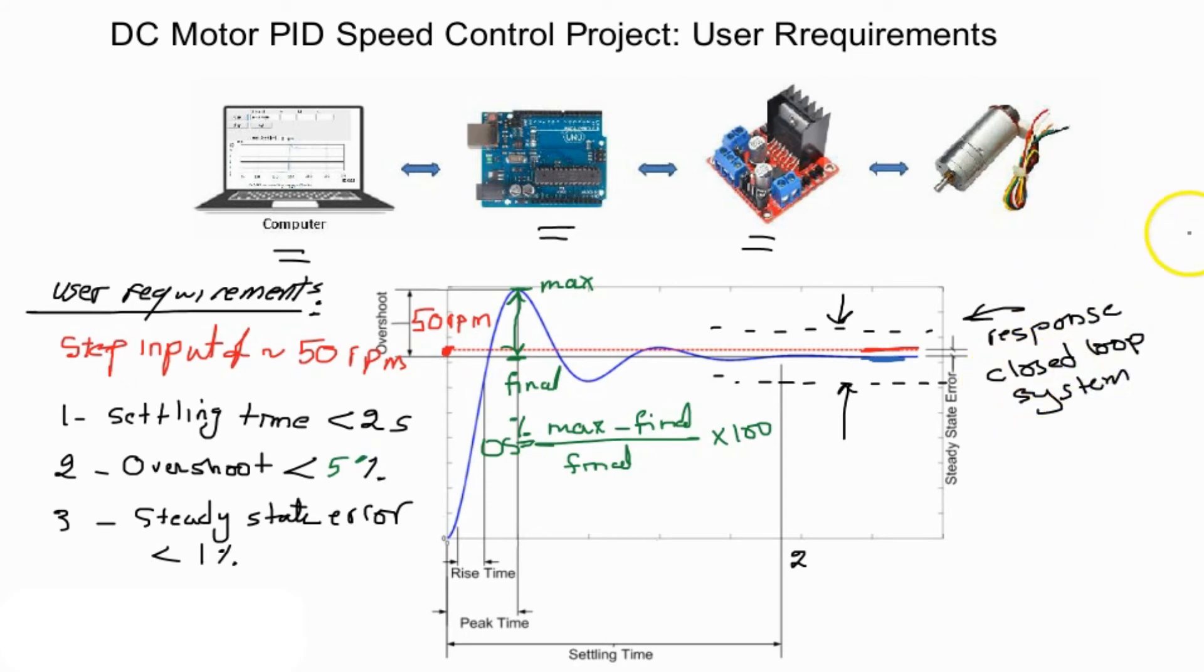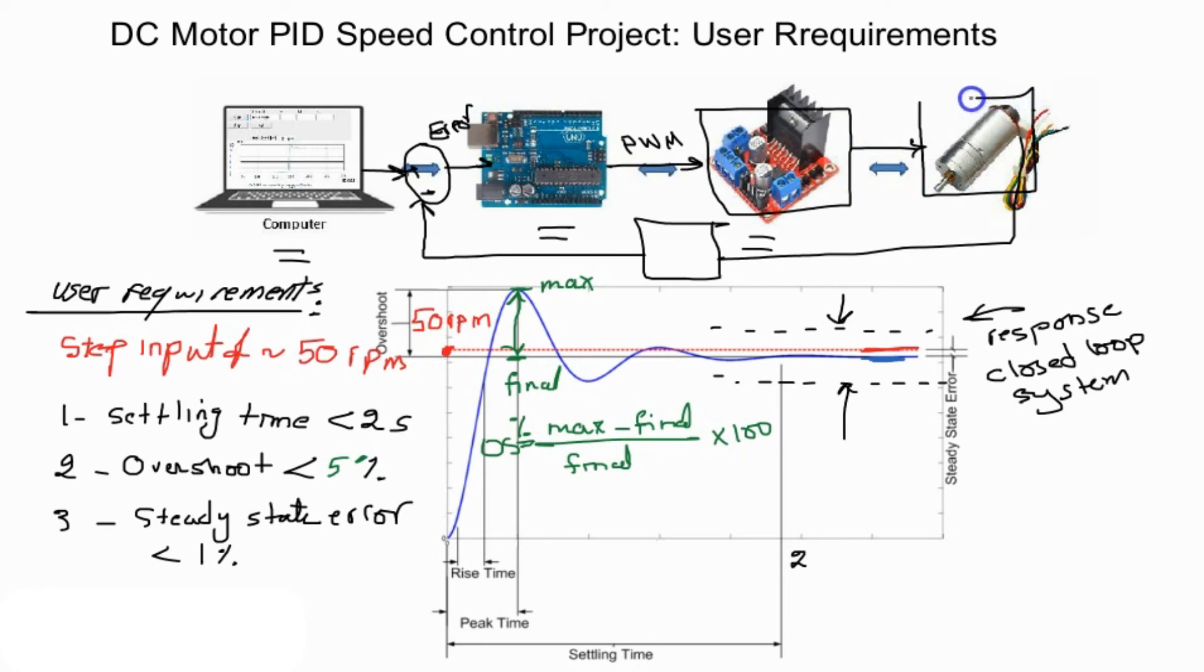We will discuss this later on where the encoder will be your feedback sensor and your desired input is given by the user. And the difference will be your error and the output will be your PWM signal. And the H-bridge will take care of your voltage and current needed by your DC motor.